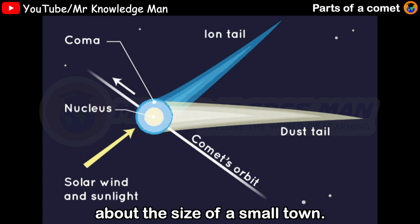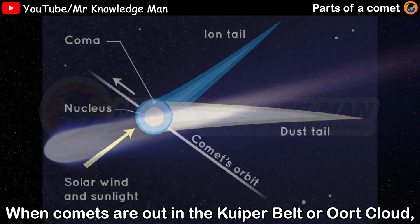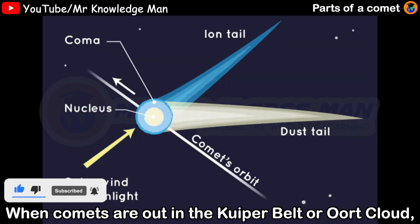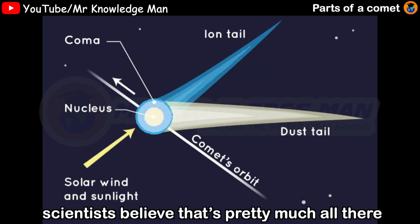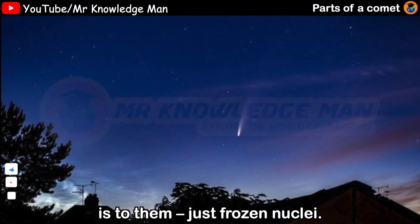About the size of a small town. When comets are out in the Kuiper Belt or Oort Cloud, scientists believe that pretty much all there is to them is just frozen nuclei.